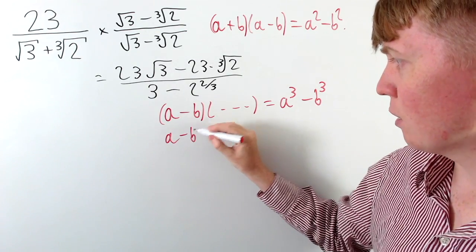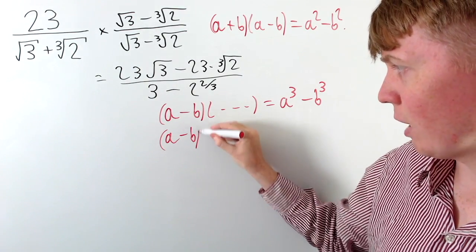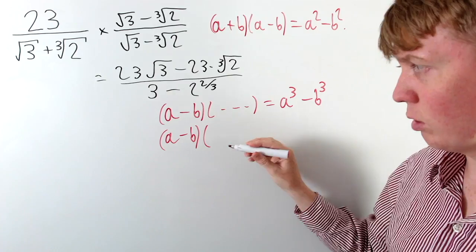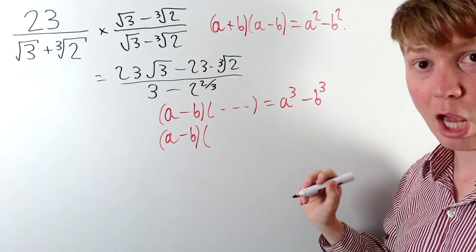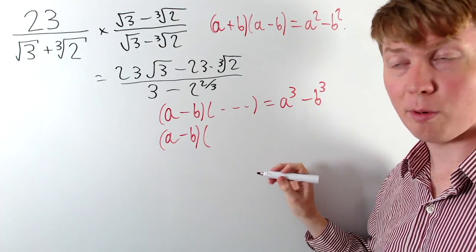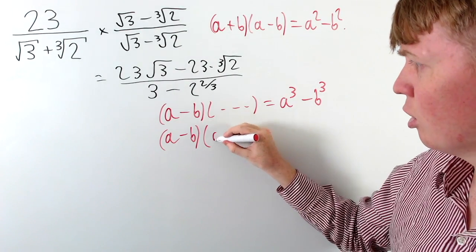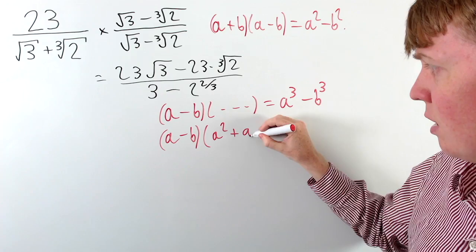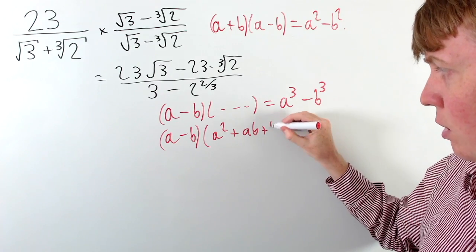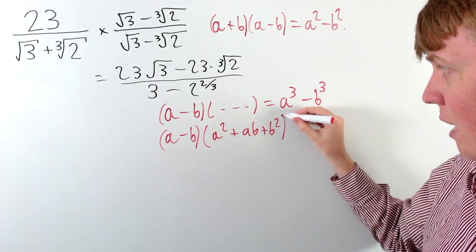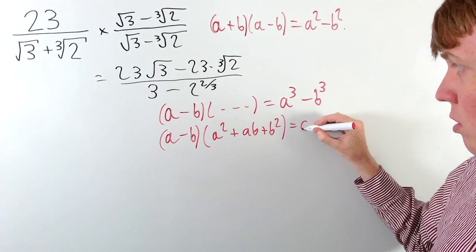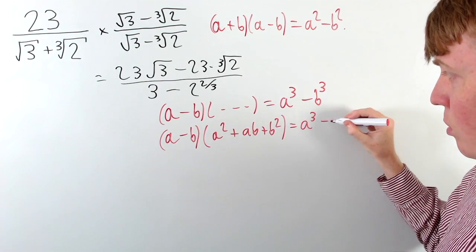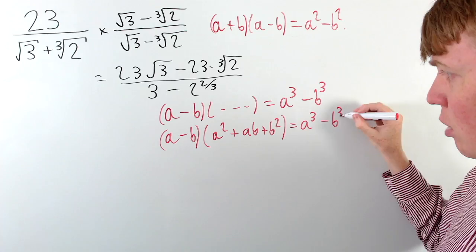So we have a minus b — if you carry out some polynomial division, or you can just check by expanding the brackets — we get that a squared plus ab plus b squared multiplied by a minus b will give us a cubed minus b cubed.